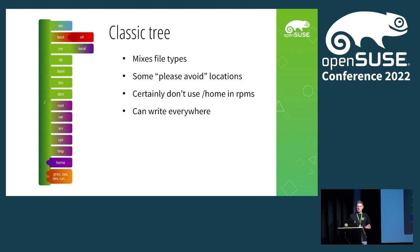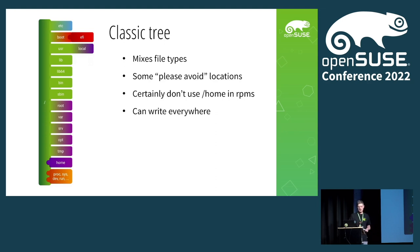Similarly for /boot, we have boot files from the OS like the kernel itself, but the initrd and bootloader config are generated, so they're not strictly from the OS. Then we have all the directories from the OS, and finally some data locations that are also a mix. Even locations we're supposed to avoid like /srv or /opt still have packages putting stuff there. The only exception that RPMs actually adhere to is not putting stuff in /home — that's data only. In a classic tree you can write everywhere, of course.